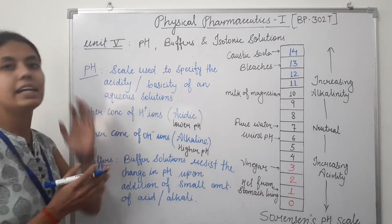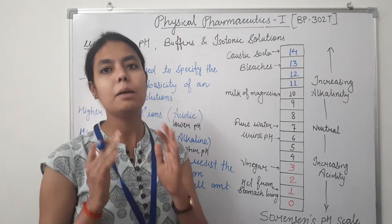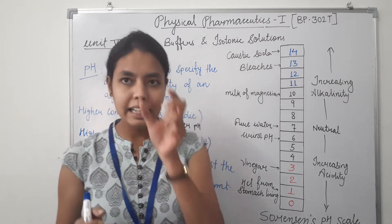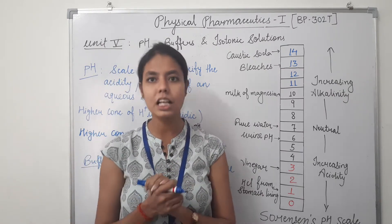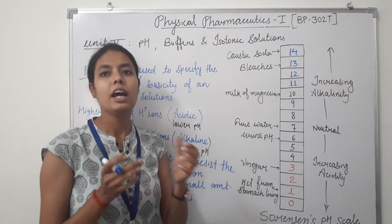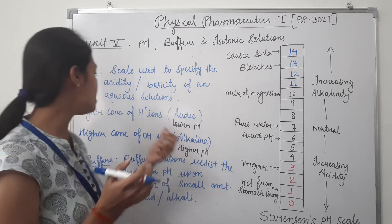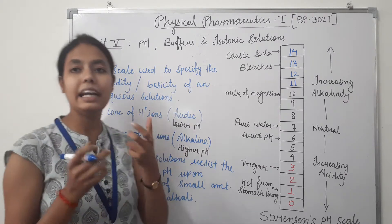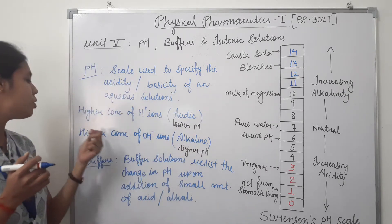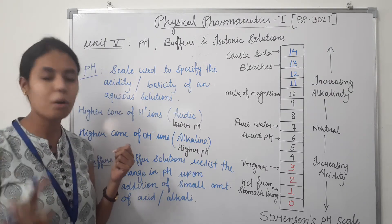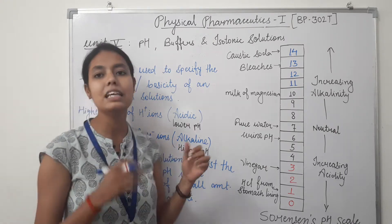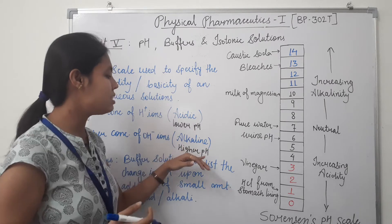First, what is pH? In chemistry, the pH is a scale which is used to specify the acidity or basicity of an aqueous solution. Acidic solutions have a higher concentration of hydrogen ions and they have lower pH values. Basic or alkaline solutions have a higher concentration of OH⁻ ions and they have higher pH values.